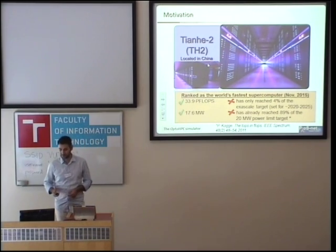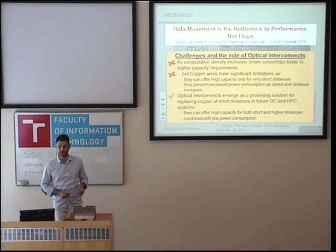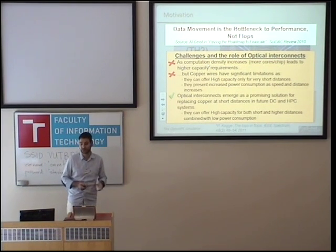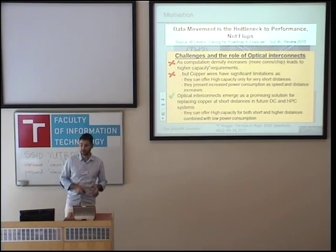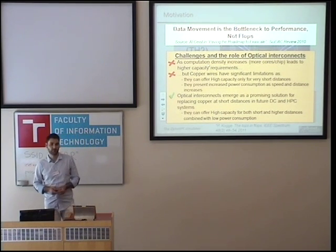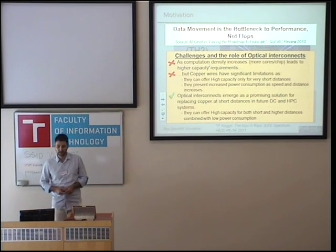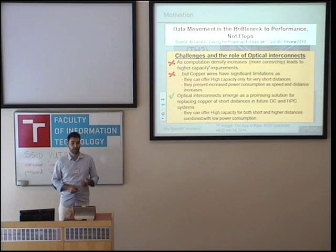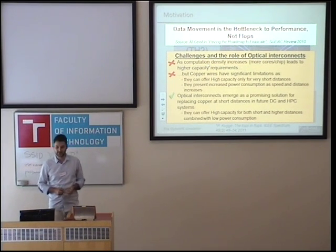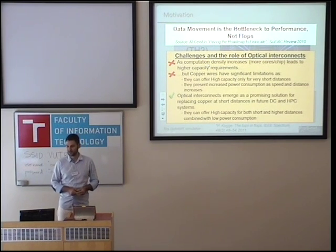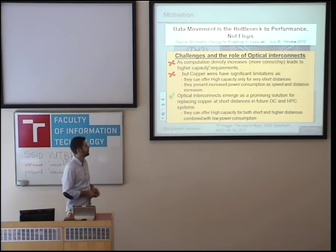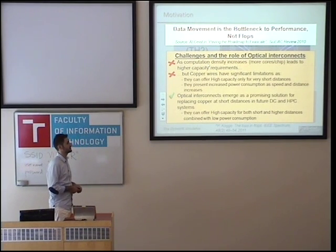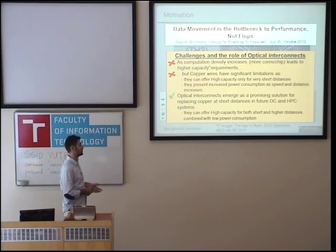The problem is that towards the exascale target, the data movement is the bottleneck to performance and not the flops. Because we can use as many computation chips as we want, but as computation density increases — when we use more cores per chip or more chips in a supercomputer system — this leads to higher capacity requirements. The copper wires have significant limitations as they can only offer higher capacity for very short distances and present increased power consumption as speed and distance increase. At this point, optical interconnects emerge as a promising solution for replacing copper wires at short distances, because they can offer high capacity for both short and longer distances.